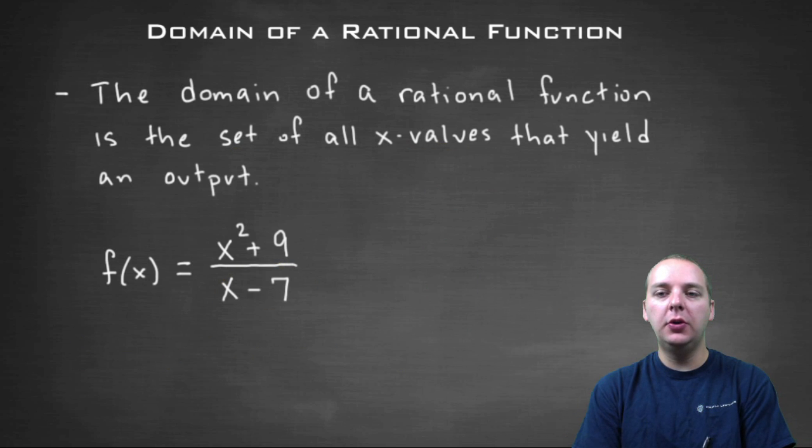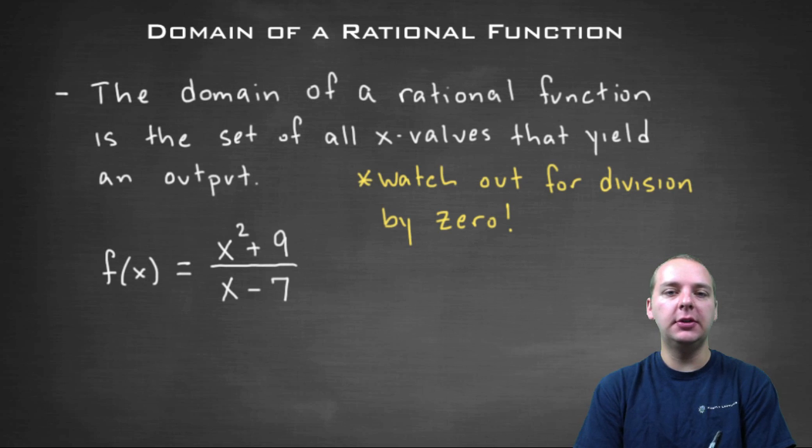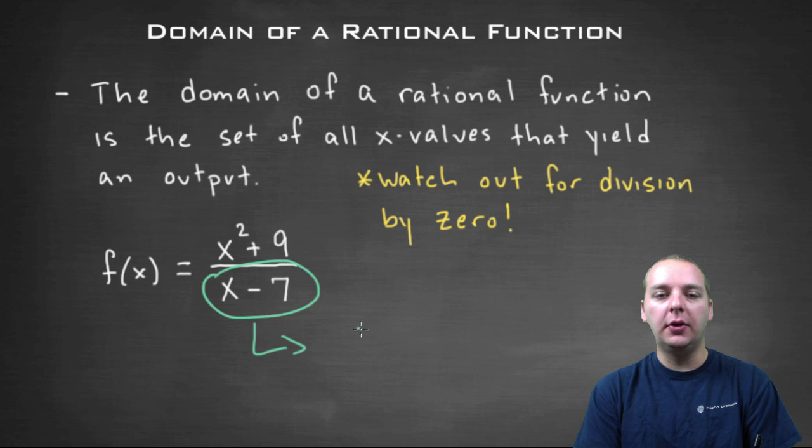So what do we do in a general situation? We watch out for division by zero. So what we do is we'll take our denominator, we'll take this guy like x minus seven, over here on some scratch paper, and we'll set it equal to zero.